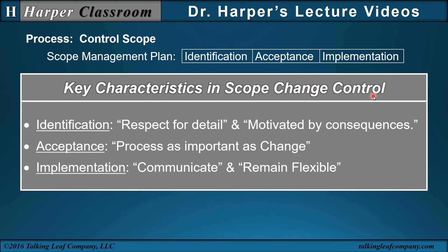Key characteristics in scope change control. Identification — respect for detail: if change is not detailed enough, it could be left open for interpretation and cause confusion; but if change is too detailed, it could be difficult for implementation and cause delays. Motivated by consequences: identification of changes should include the determination of consequences that are positive for the project. Acceptance — process as important as change: the process of what the changes are, how they're made, when they're made, and communicating the changes is often more important than the change itself. Implementation — always communicate to everyone from beginning to end, and remain flexible, because good people can make the change work.